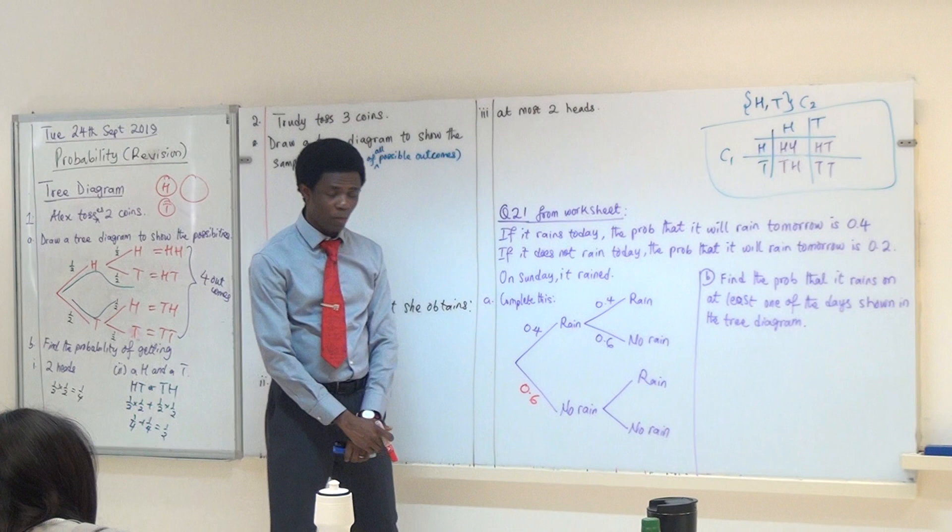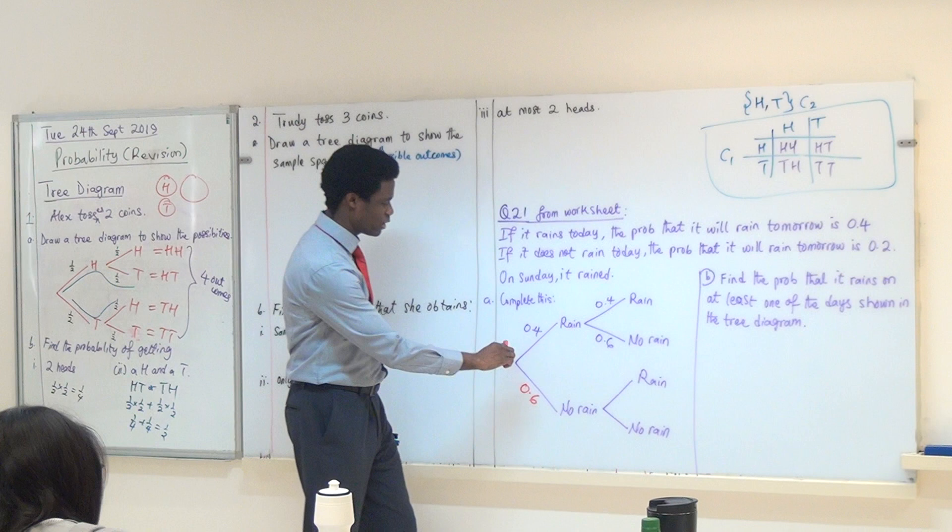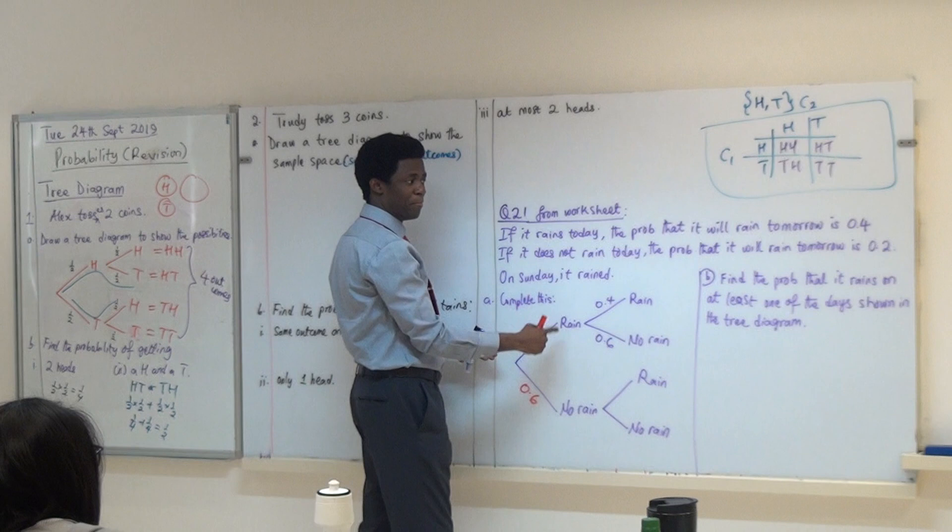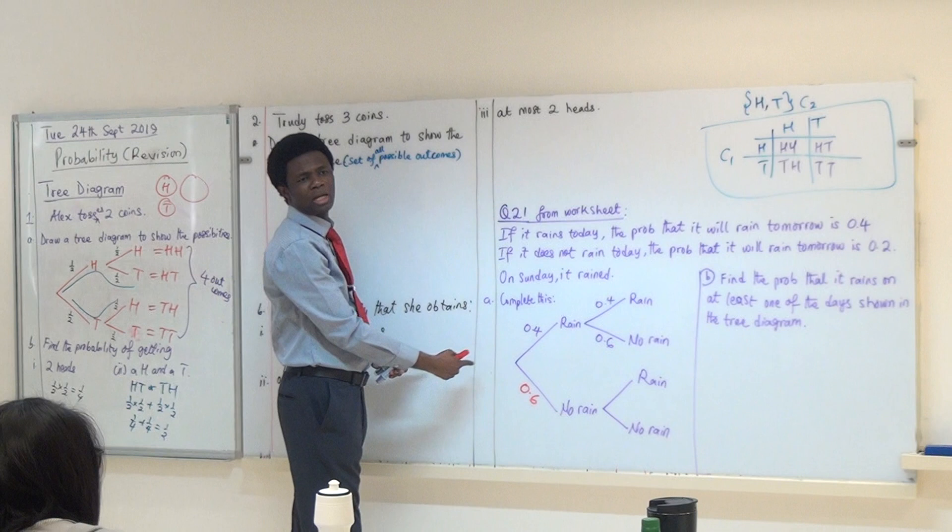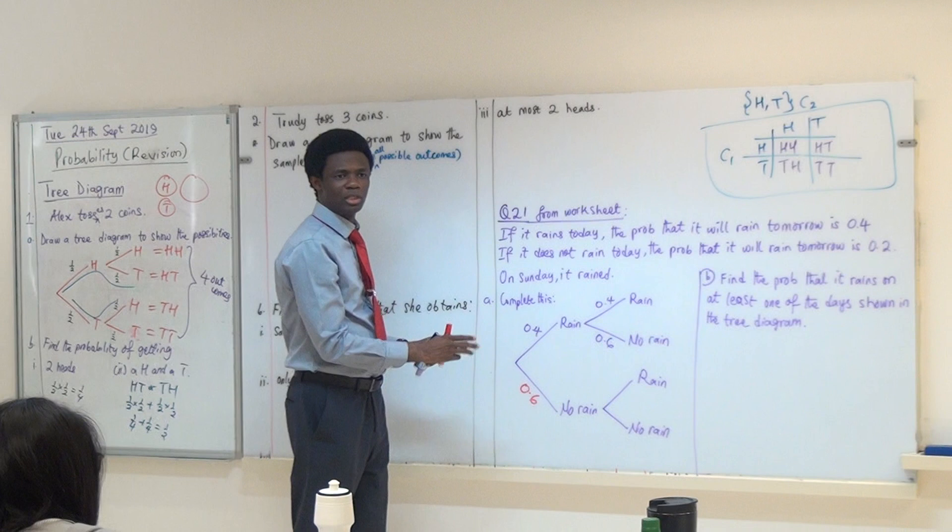Then what about this one? 0.2. Are you sure? Why not 0.4? Because the question says, if it does not rain today. That's it. This is about if it rains. If it rains today, the probability that it rains tomorrow is 0.4. So, the first condition has been, this part was not mentioned initially. Or, let's say there is a previous day. We can look at it like this, a previous day. If it rains on that previous day, the probability that it rains again is 0.4. So, now it rains again today, the probability that it rains here is this. So, this one is settled. Okay?